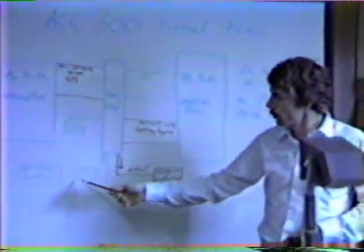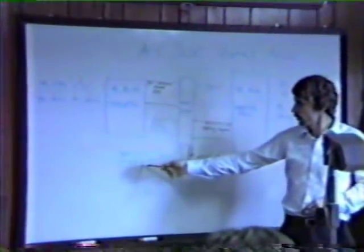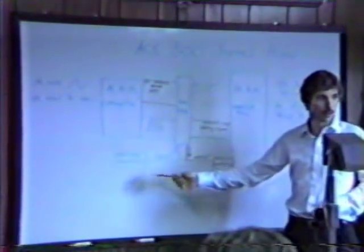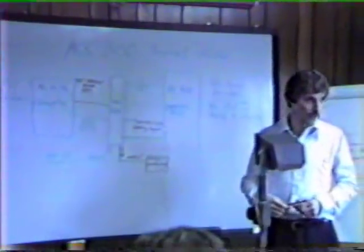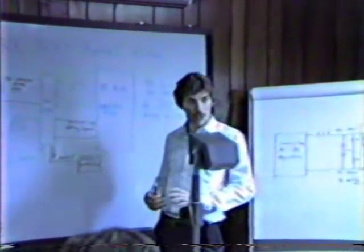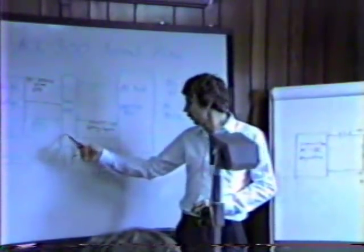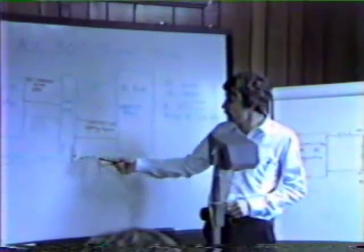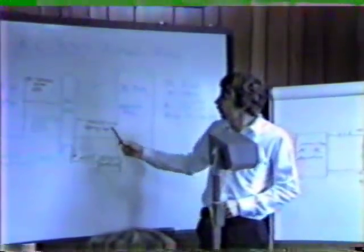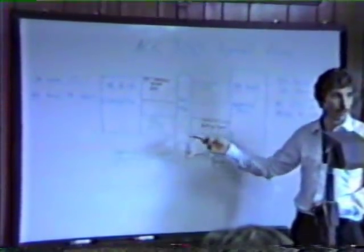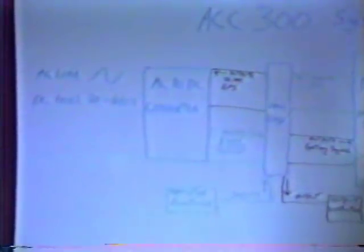Down here our inputs would be our operator functions. This pertains to the TB1 terminal block, our speed pot, process follower card, all those type inputs that are for what we want it to do. Out here this is just an output to the output content. The card cage is considered the processor. That's where it is. This controls these two blocks.